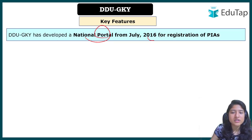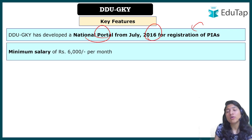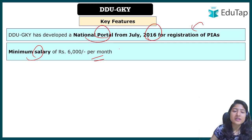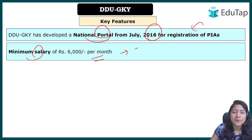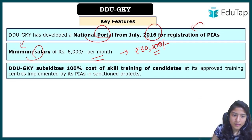A national portal was launched in 2016 to ease registration for implementation agencies. The minimum salary provided to skilled youth placed under the scheme is ₹6,000 per month for national or regional placements. For foreign placements, up to $500 — approximately ₹30,000 per month — is provided.